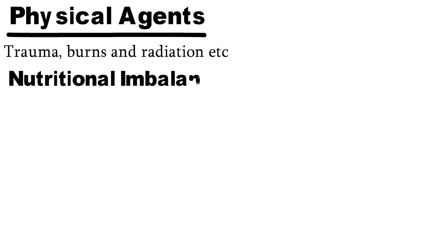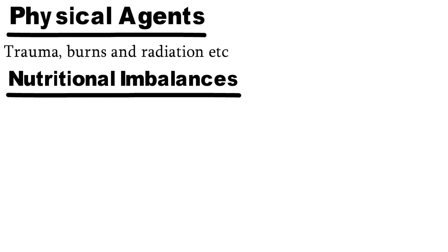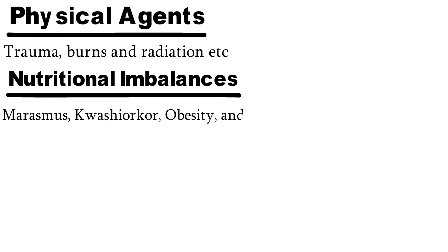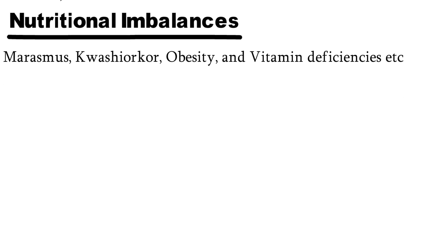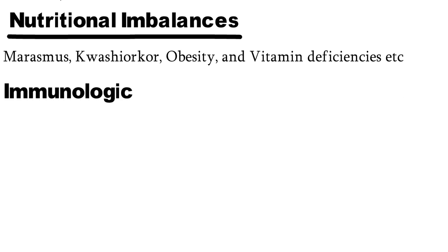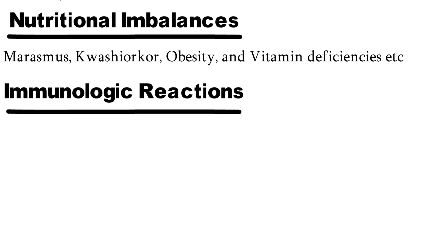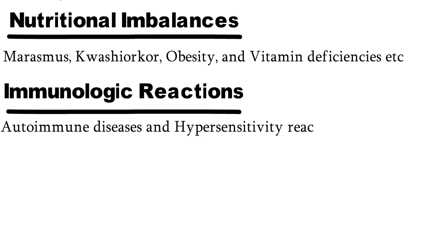The seventh cause is nutritional imbalance — if the body does not get enough or proper nutrition, cell injury occurs. Examples include marasmus, kwashiorkor, obesity, and vitamin deficiencies. The last cause of cell injury is immunologic reaction, where the body damages itself, like in autoimmune disease, or hypersensitivity reactions, which are also responsible for cell injury.